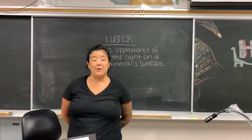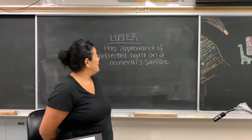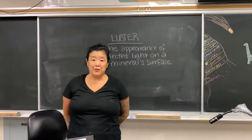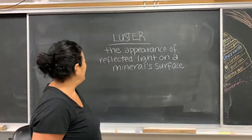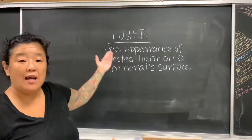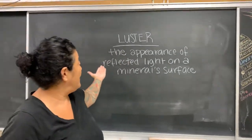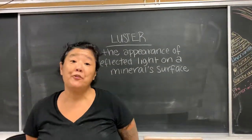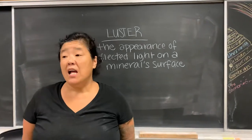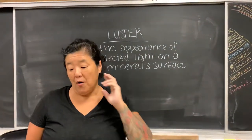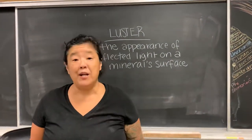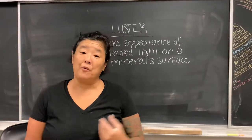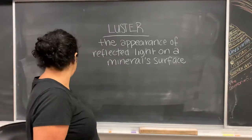The next physical property you're going to learn today is luster. Luster is simply the appearance of how reflected light looks on a mineral surface. We're going to break it down into categories and subcategories, as you will see.